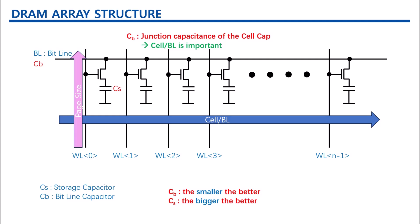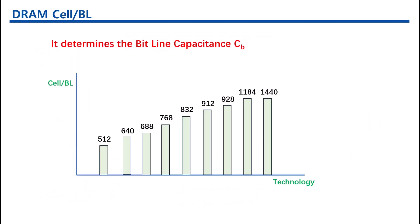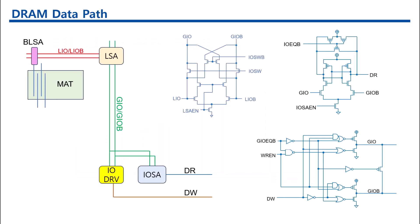The number of cells connected to each bit line is crucial for determining the density and performance of the DRAM. Common values are 688, 832, 928, etc. The number of cells per bit line is influenced by design parameters such as the CB to CS ratio.